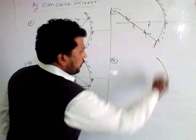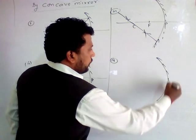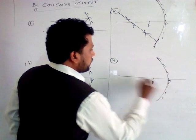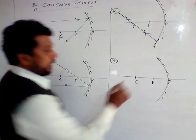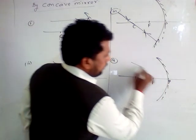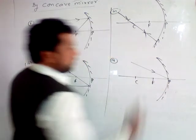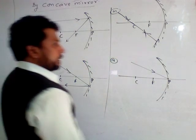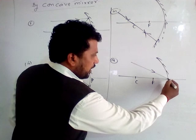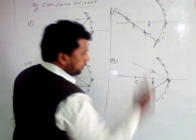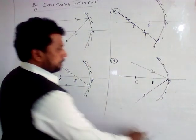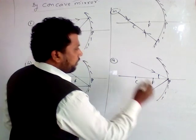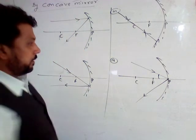And the fourth rule: when any ray of light passes from P, then after reflection, it will be reflected with the same angle — the angle of incidence equals the angle of reflection.